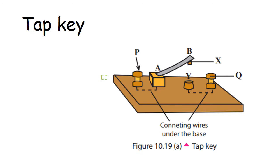When the B end of the metal strip is pressed with your finger, X and Y ends connect with each other and the circuit between B and Q is completed. When the finger is released, the B end of the AB metal strip lifts up like a spring and the circuit is disconnected. This is called a one-way tap key because it is used to let current flow in one direction.